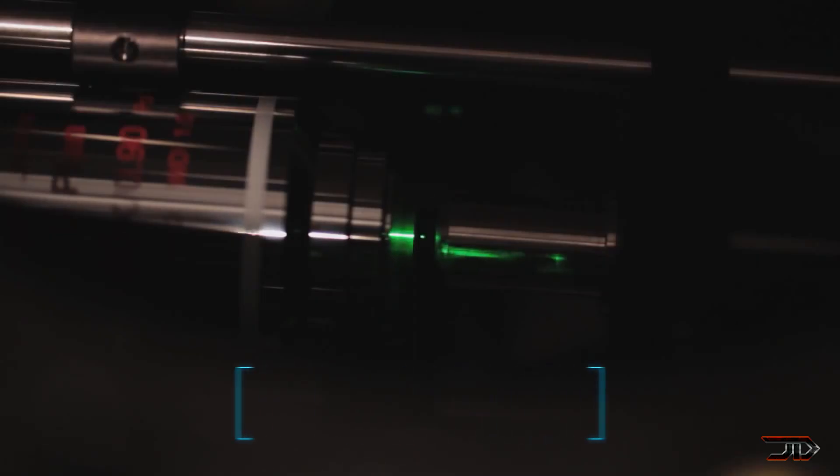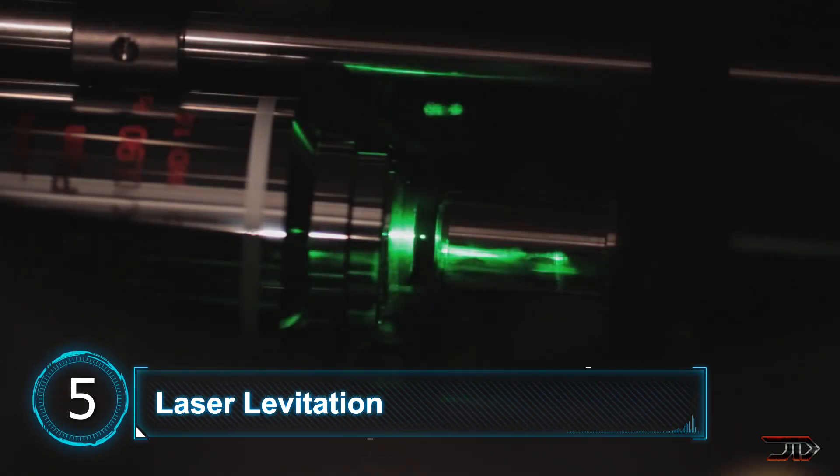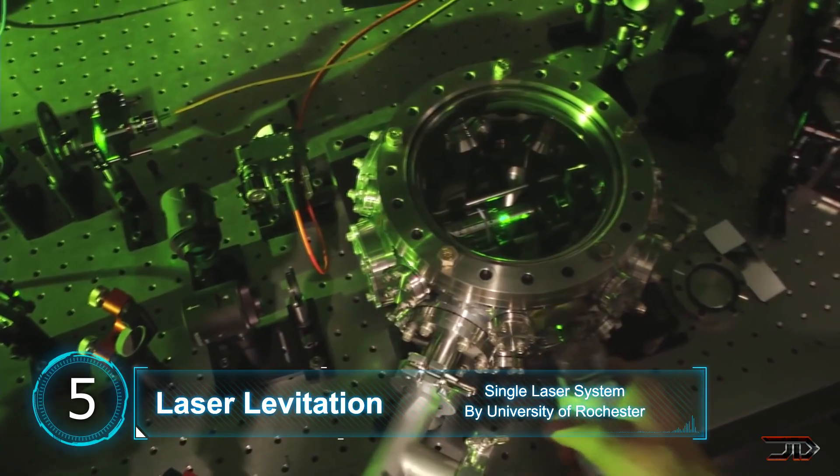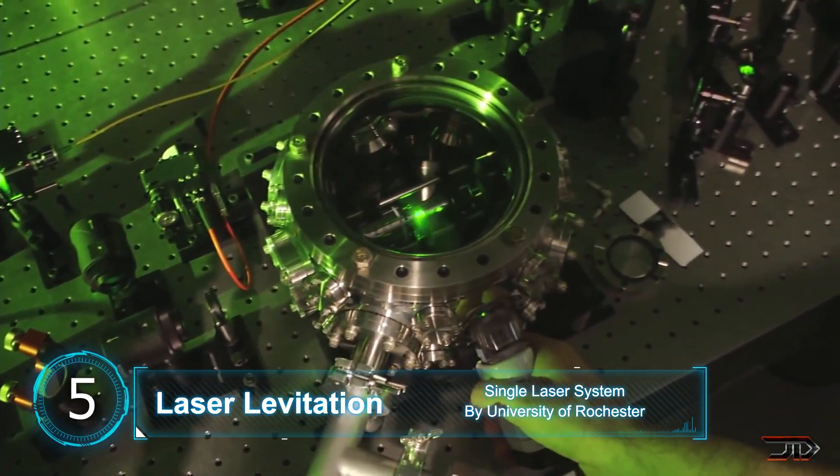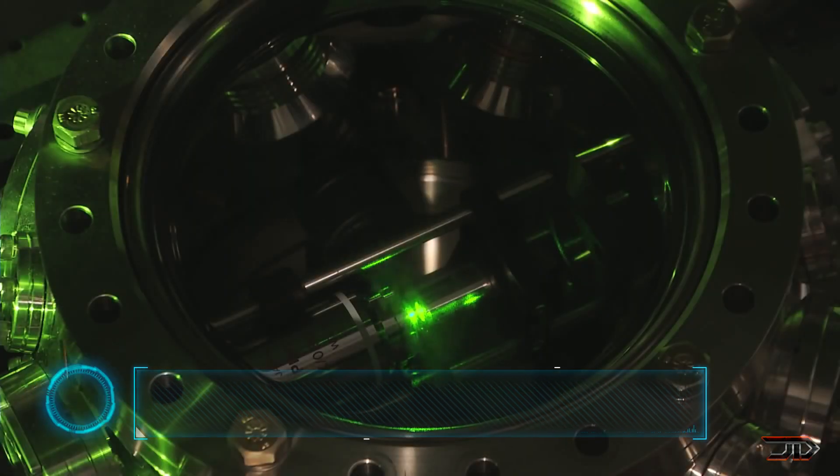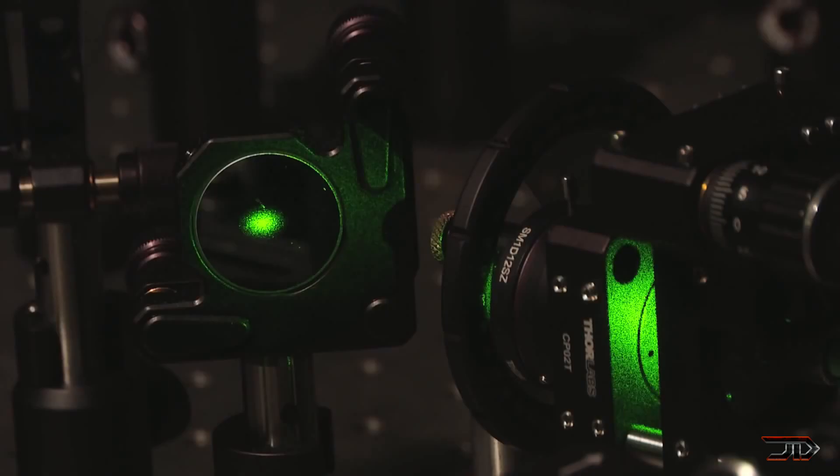At number five, laser levitation. This particular form of levitation can hold tiny nano diamonds in a vacuum. Many 100 nanometer diamonds are sprayed into the chamber and then eventually one floats towards the laser's focal point.